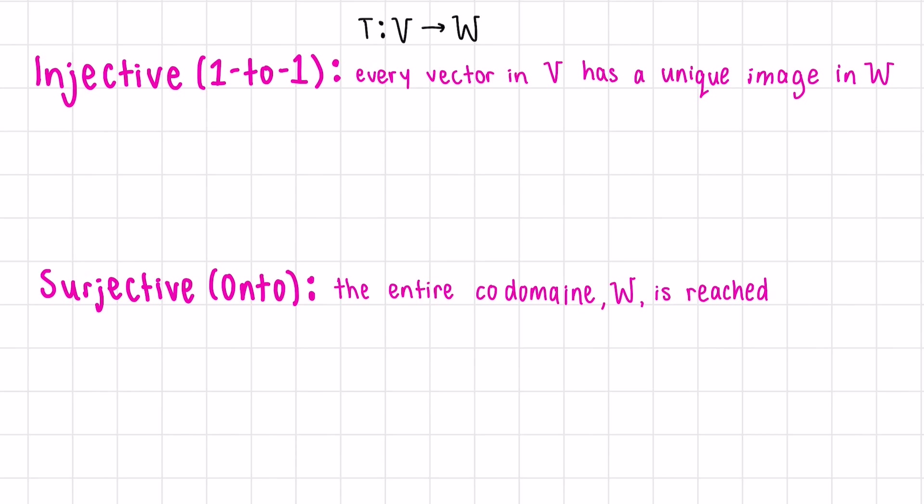There are two special classes of transformation: injective and surjective transformations. Some transformations are even both injective and surjective, or equivalently one-to-one and onto. But what does this mean?